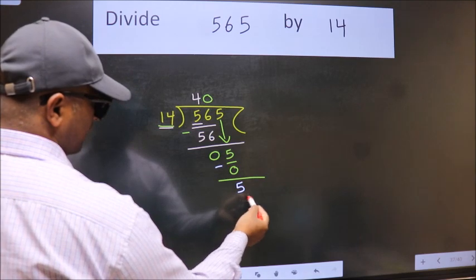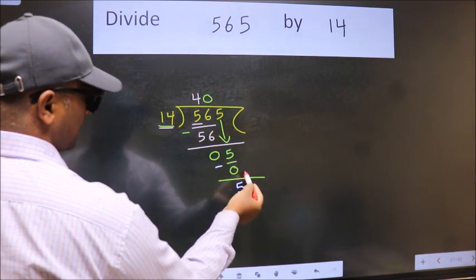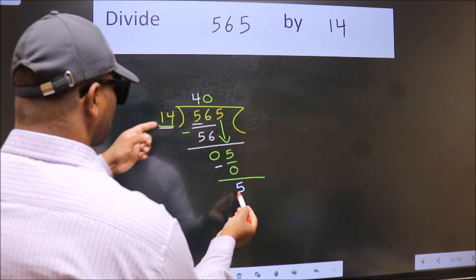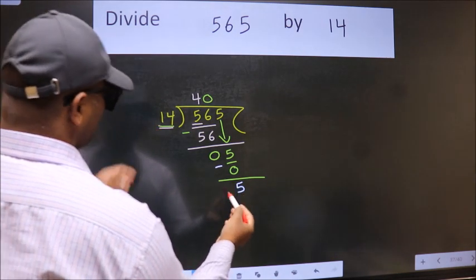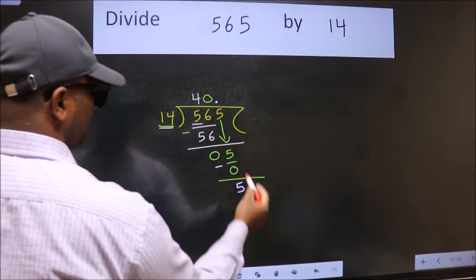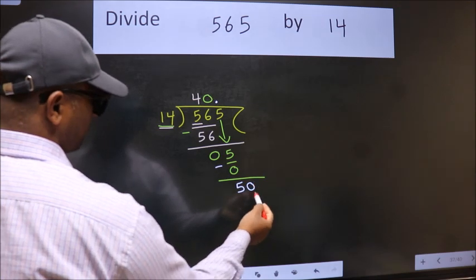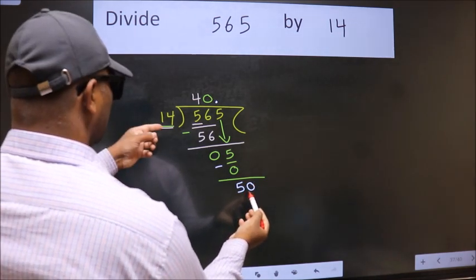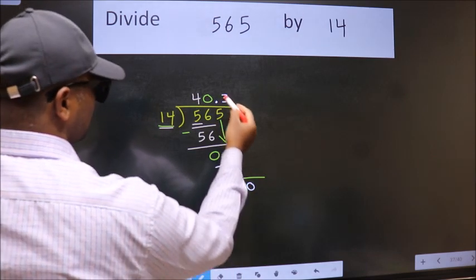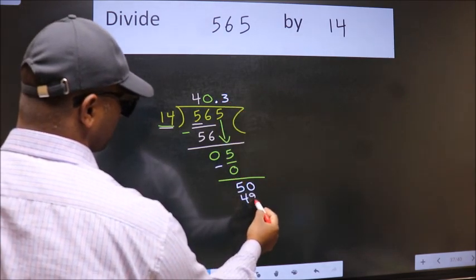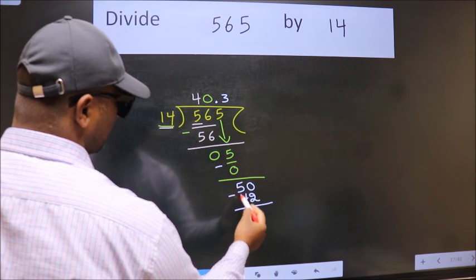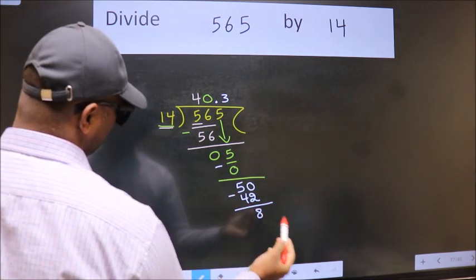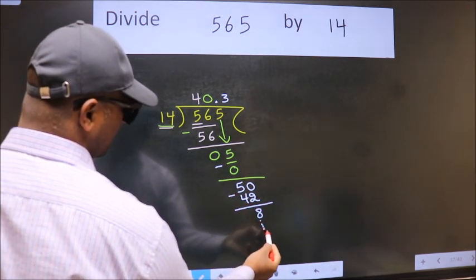Over here, we did not bring any number down, and 5 is smaller than 14, so now we can put dot and take 0. So 50, a number close to 50 in 14 table is 14 threes, 42. Now we subtract, we get 8, and you continue the division.